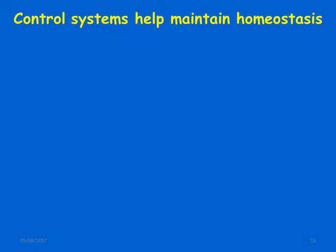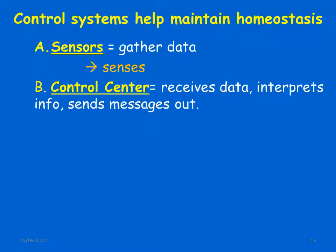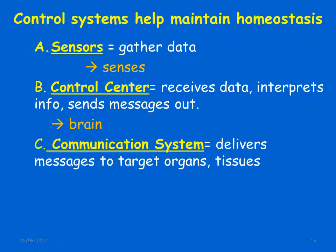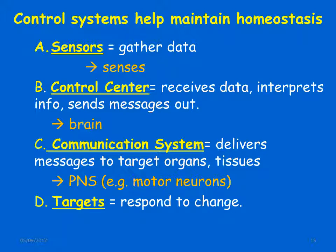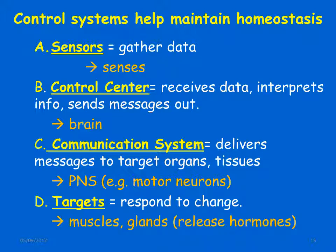Control systems help maintain homeostasis. Sensors gather data by sensing changes. The control center — the brain — receives the data, interprets the information, and sends out messages. The communication system, via the peripheral nervous system such as motor neurons, delivers messages to target organs and tissues — muscles and glands — which respond to the change by releasing hormones.